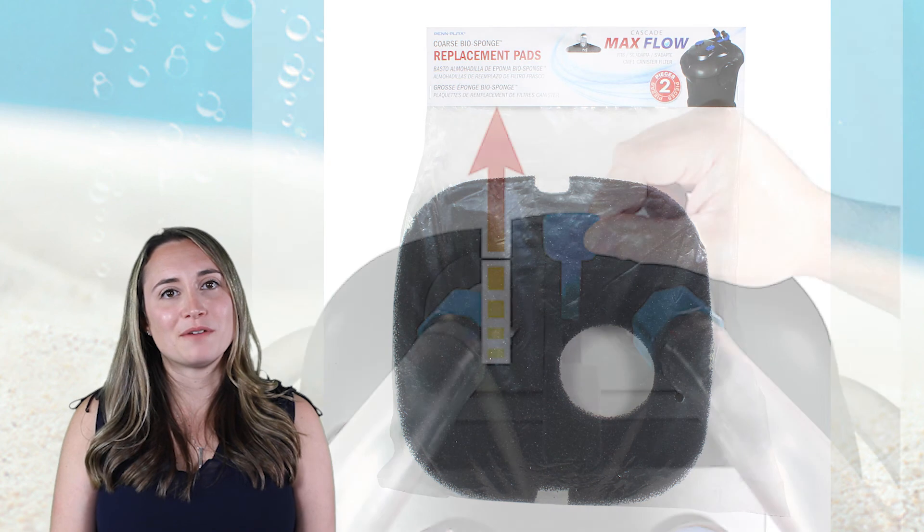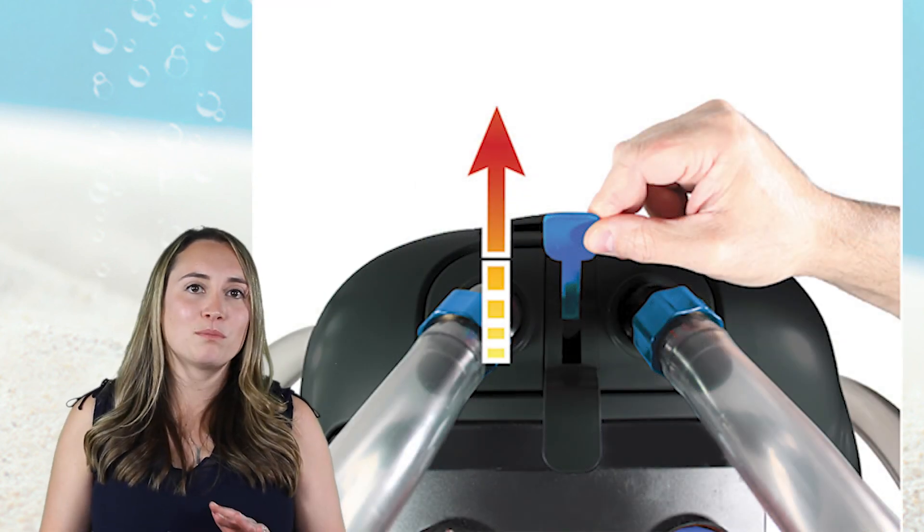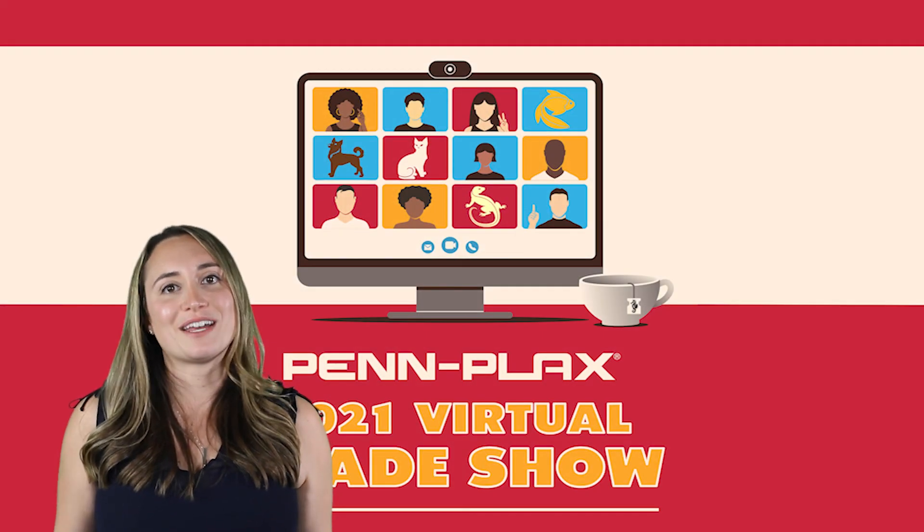There's 850 gallons per hour of power but it's adjustable, easy priming, perfect filtering, crystal clear water for your massive tanks.